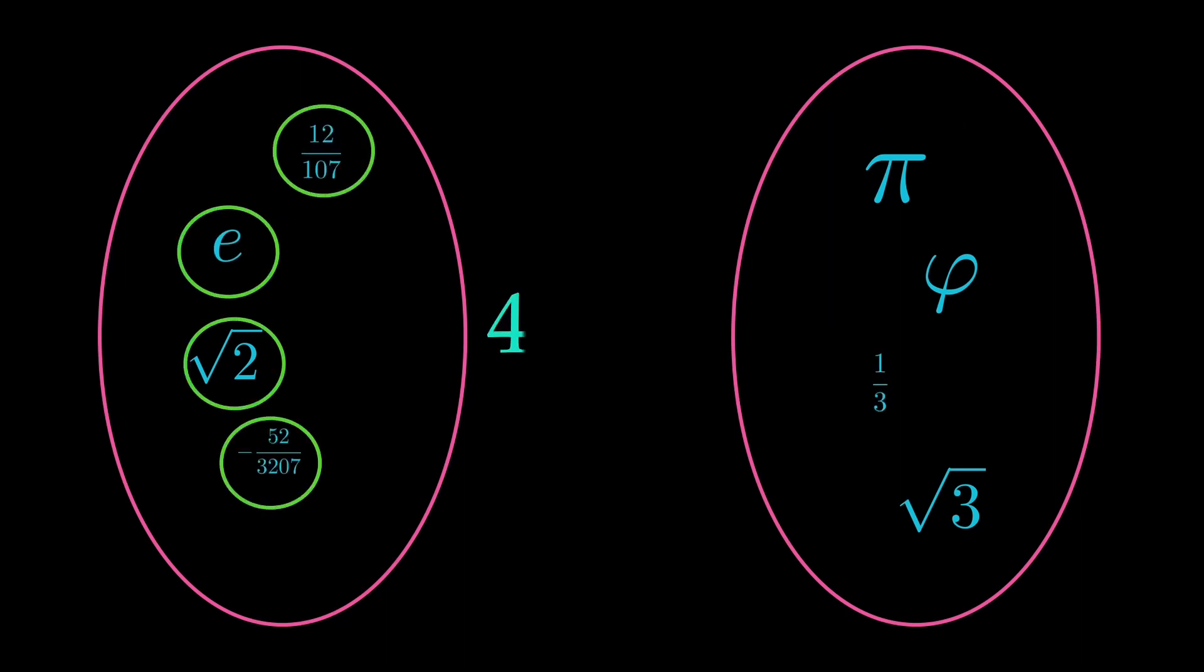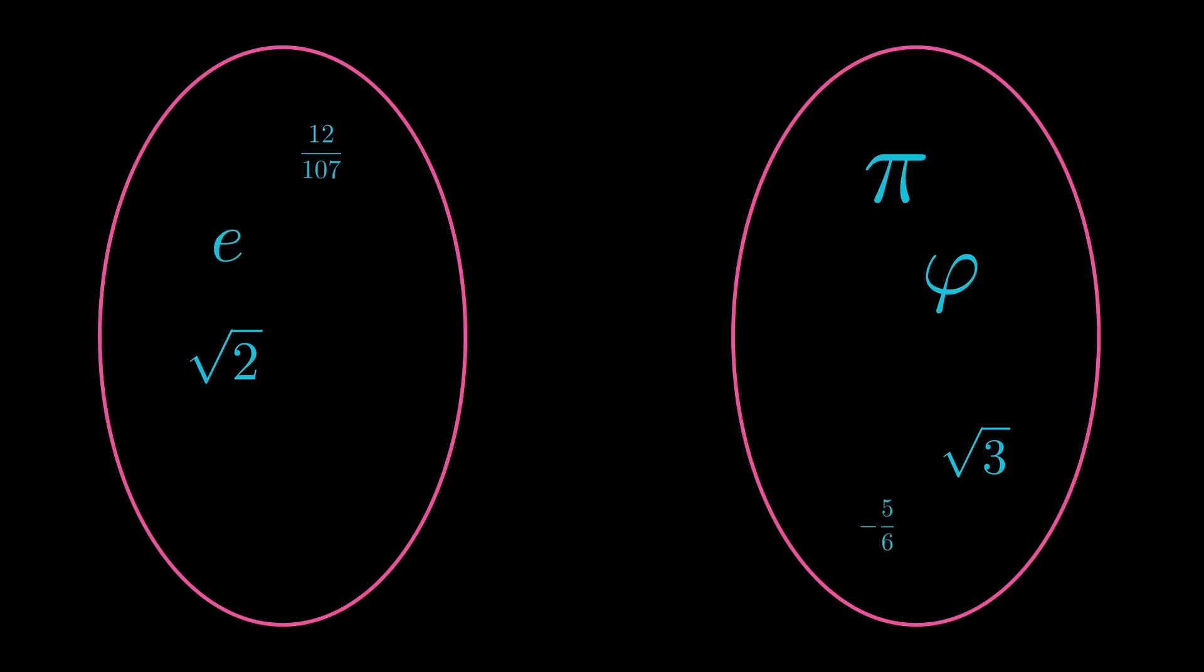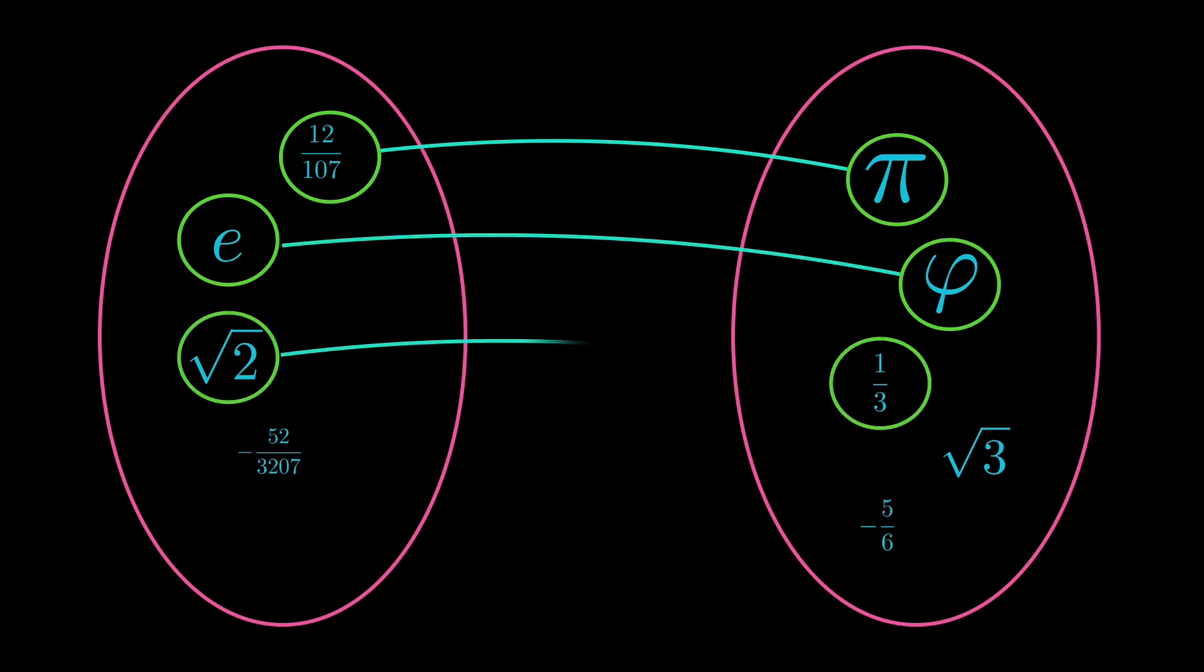Before we attack the problem of infinite sets, let's look at finite sets. How do you compare the size of two finite sets? That's easy. You count the numbers in the left set and the right set. If both sets have the same amount of numbers, they're the same size. But let's think about how you would do it without actually counting. Without counting, you could pair the numbers up. Each number from the left set gets a partner from the right set. If all numbers in both sets have exactly one partner and no number is without one, then both sets are the same size. Mathematicians call this a bijection, and we can easily use this for infinite sets.